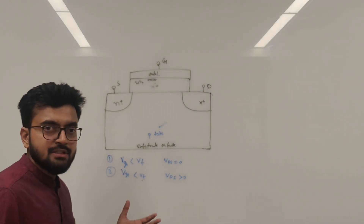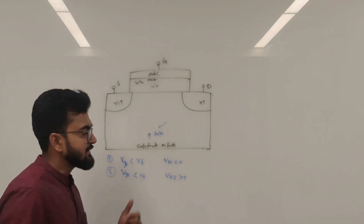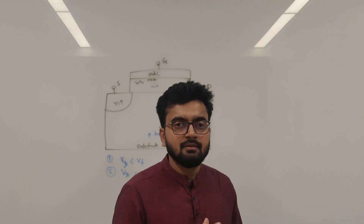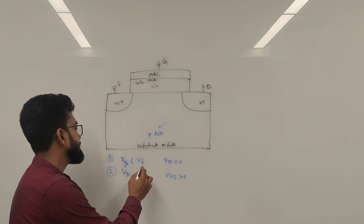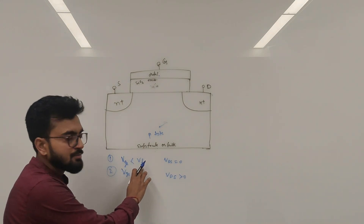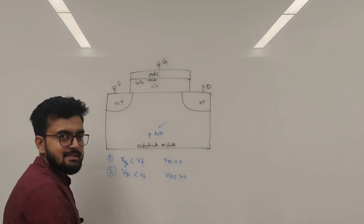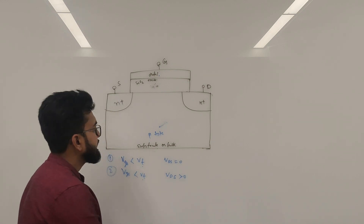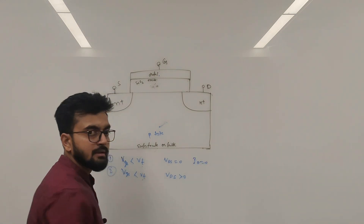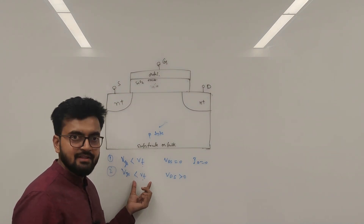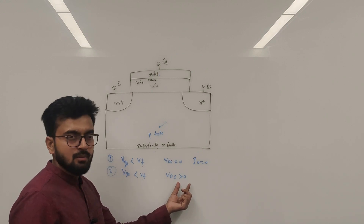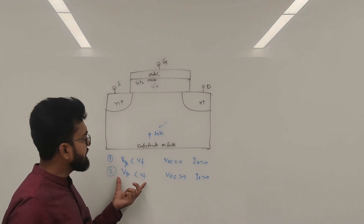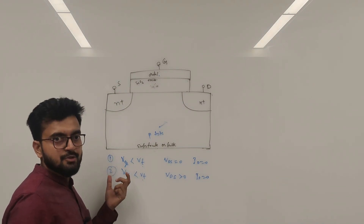Let's try to understand with the example of an NMOS MOSFET. There are two conditions: the device off condition and on condition. When gate-to-source voltage VGS is less than the threshold voltage and VDS is zero, there will not be any current between the drain and the source — ID is zero. Even when VGS is less than V-threshold with VDS greater than zero, there shouldn't be any current, because we didn't satisfy the condition of threshold voltage with respect to gate-to-source voltage.